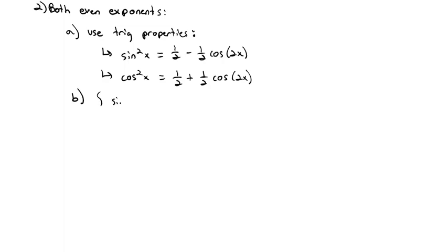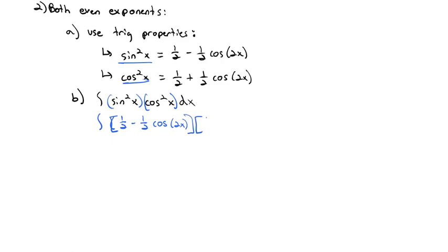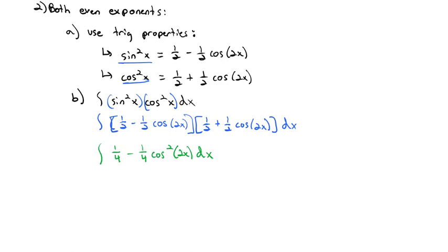Let's do the integral of sine squared x times cosine squared x dx. Both have even exponents, so we'll use these properties on both. Sine squared becomes 1/2 minus 1/2 cosine of 2x, and cosine squared becomes 1/2 plus 1/2 cosine of 2x dx. Multiplying this out, we have a difference of squares — a sum and a difference — giving us 1/4 minus 1/4 cosine squared of 2x dx. The problem is we again have a cosine with an even exponent, so we have to apply the formula again.